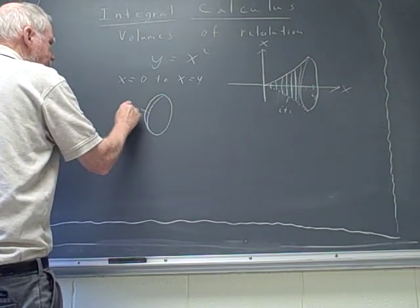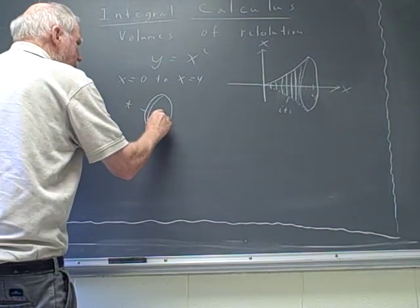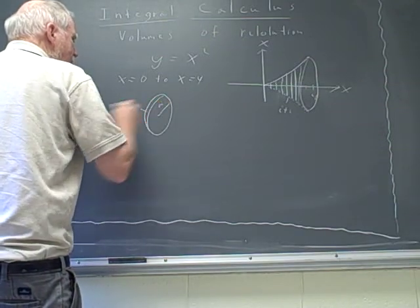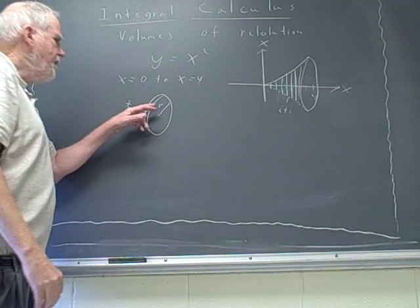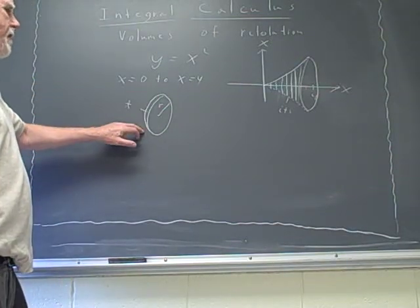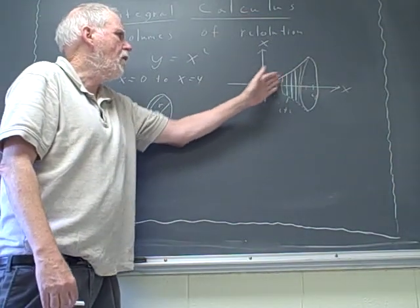And it has a thickness, t, and it has a radius, r. And if we knew t and r, we could find the volume of that particular disk. And once we can find the volume of one, we can find them all.